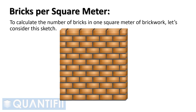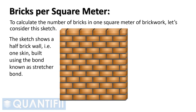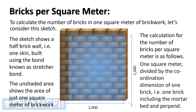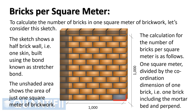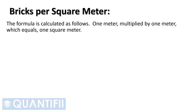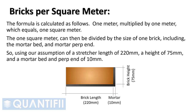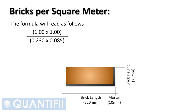To calculate the number of bricks in one square meter of brickwork, consider a sketch showing a half brick wall — one skin of brickwork — built using stretcher bond. The calculation divides one square meter by the coordination dimensions of one brick including the mortar bed and perp end: 1 ÷ (0.23 × 0.085) = 51.15 bricks, which we can round up to 52 bricks per square meter.